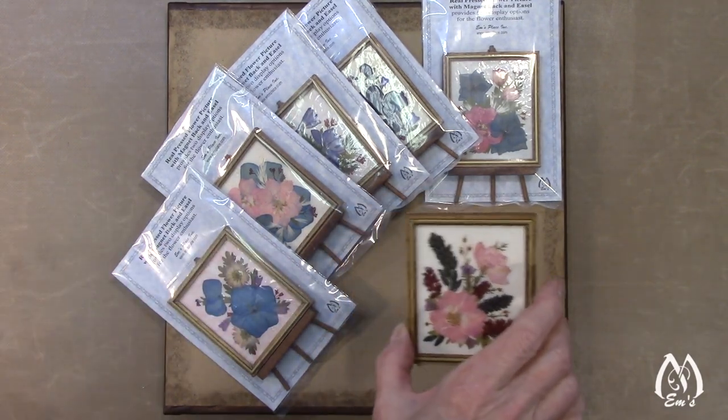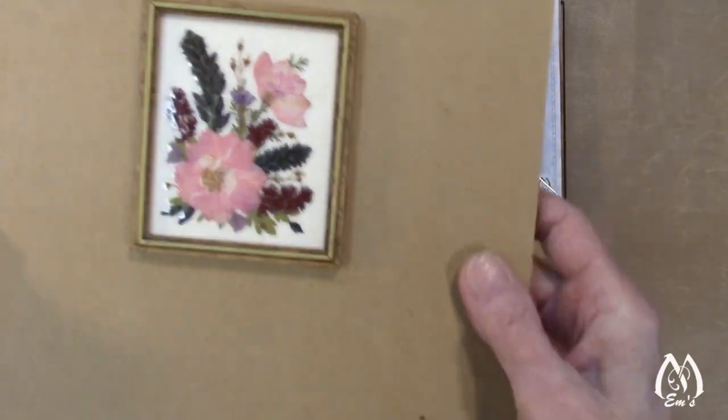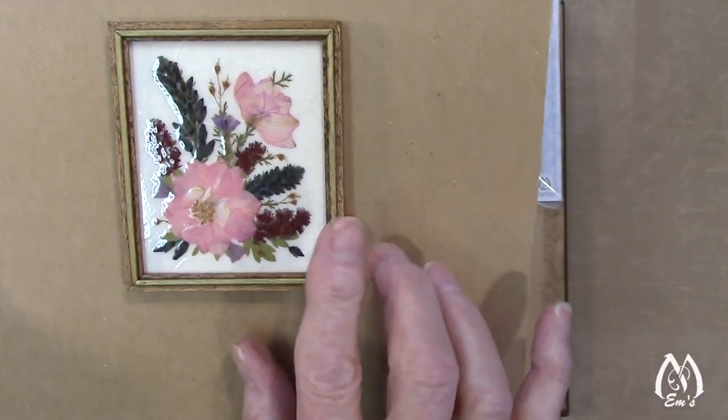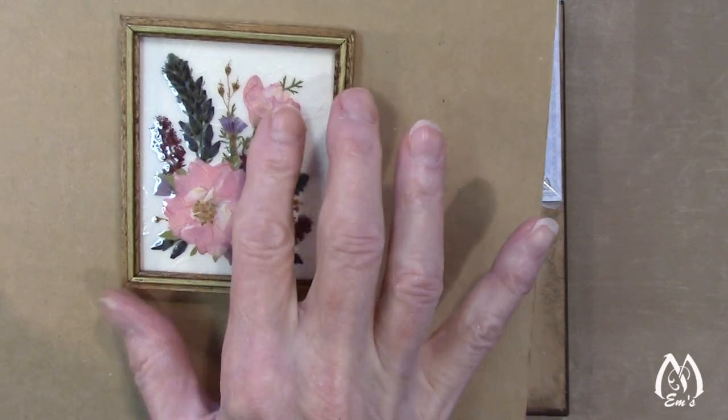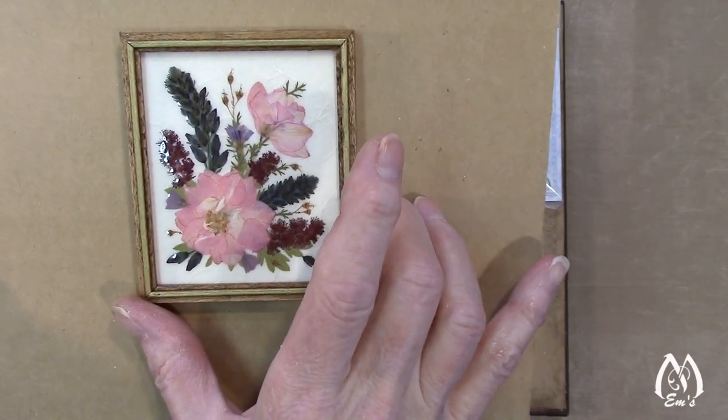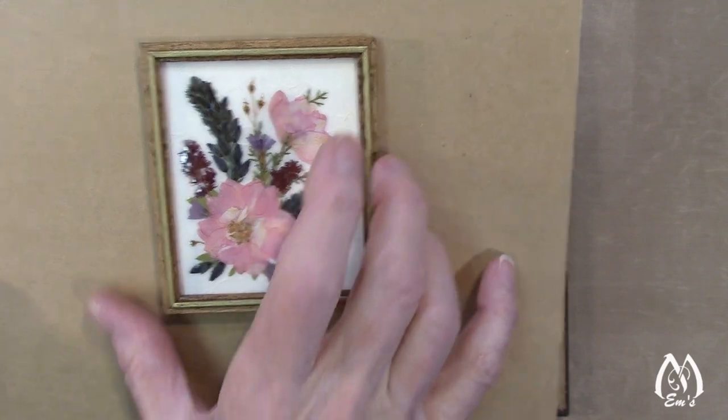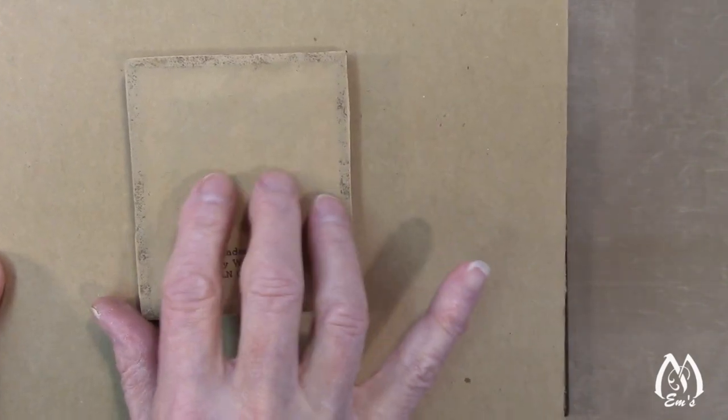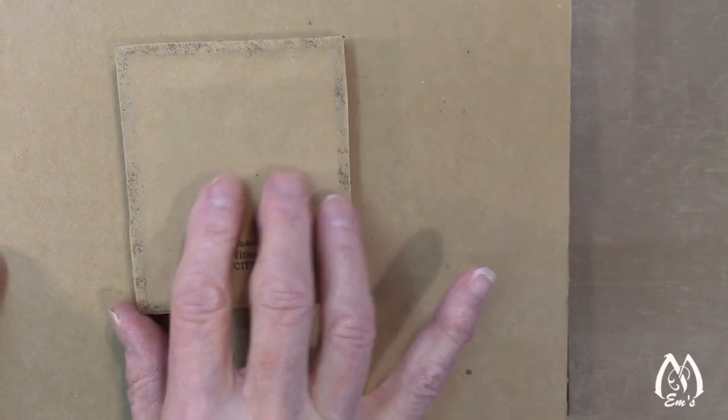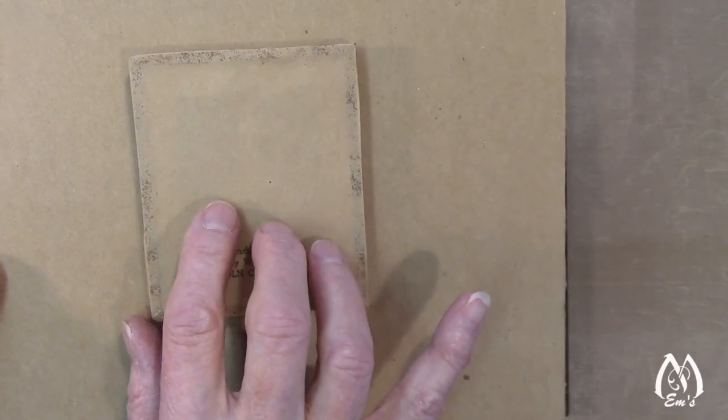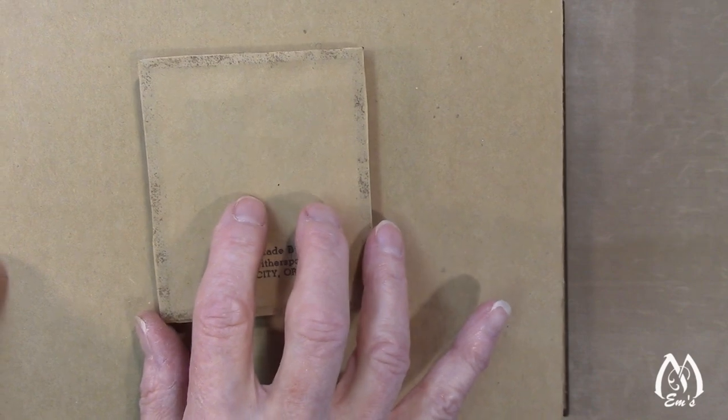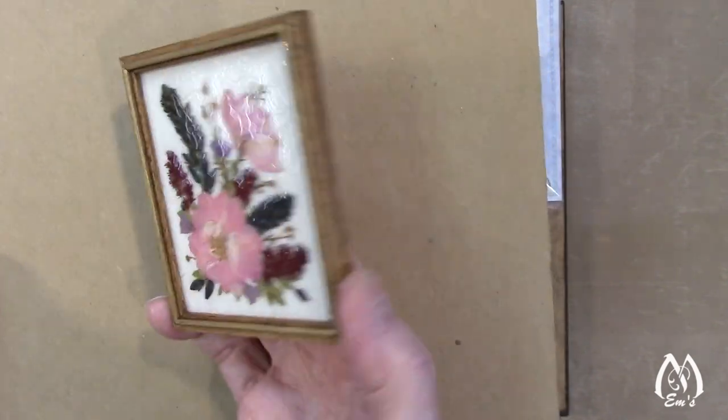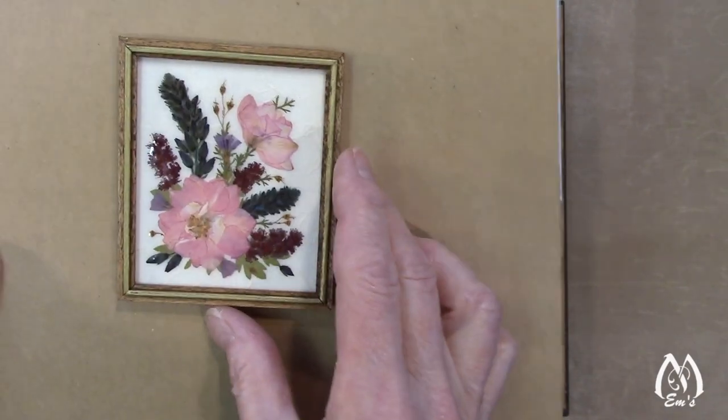So these are little mini displays. They're in wood frames and they're laminated. These pictures don't have glass. On the back, you can see that I do the same thing. I use the paper and I stretch it out with the same method that we're talking about in this video sequence here.